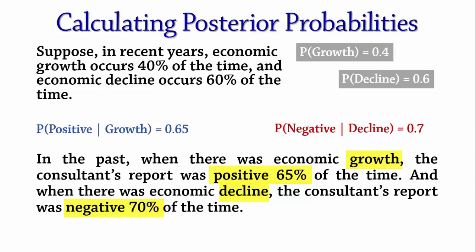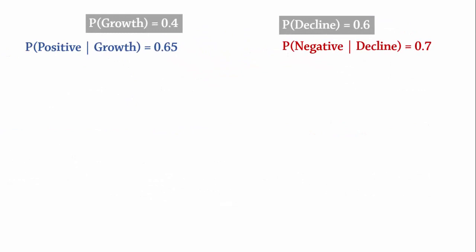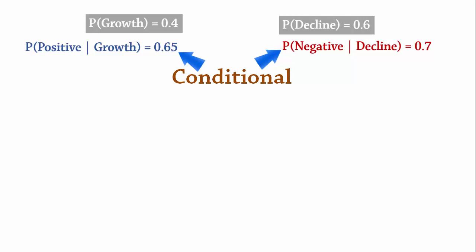Here is a summary of the given information. The probabilities of the states of nature at the top are called prior probabilities — that is, the probabilities assessed initially or at the beginning. The 0.65 and the 0.7 probabilities are called conditional probabilities; they represent the success history of the consultant. Note that these probabilities are given the outcomes, growth and decline, whereas posterior probabilities are given the consultant's report.